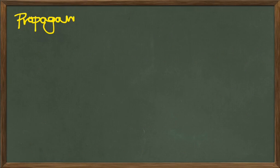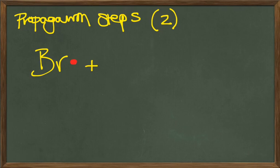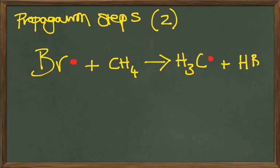The next question, part of the question, looks at the propagation steps of this reaction. So this is where one of our free radicals that we produced in our initiation step is reacted with the alkane,